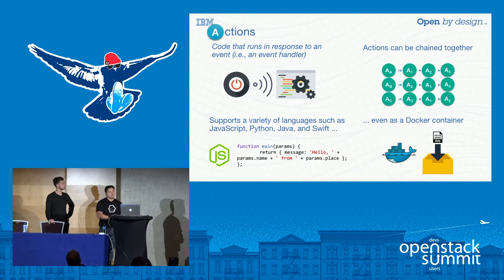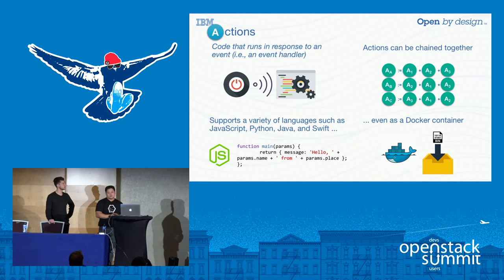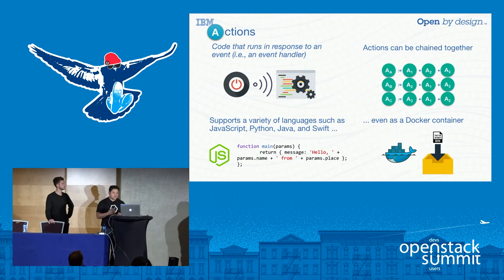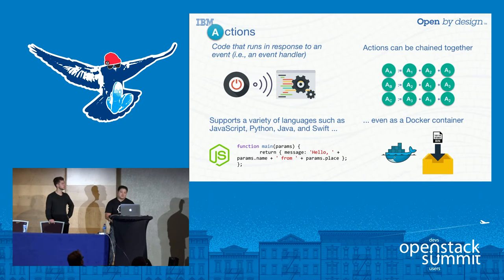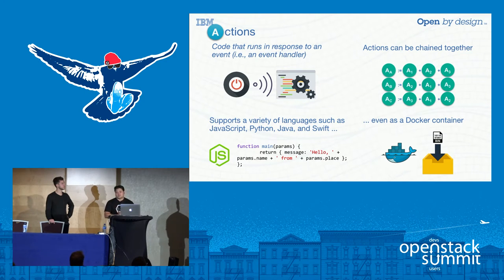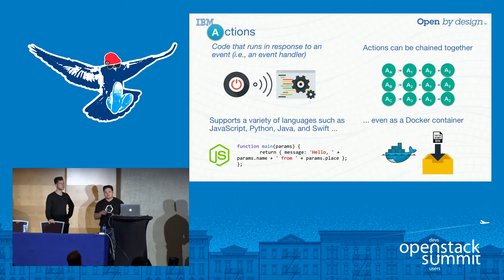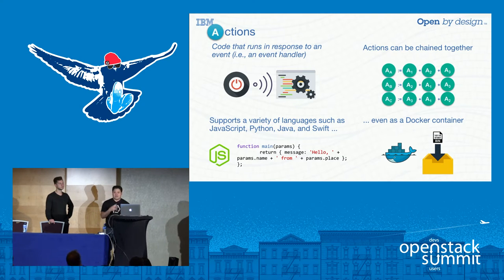OpenWhisk supports a polyglot development environment, so actions can be defined in languages such as JavaScript, Python, Java, and Swift, among other familiar programming languages. OpenWhisk also supports Docker containers, so you can take any of those languages or even binaries, drop them into a Docker container, register the action with OpenWhisk, and have them execute easily and consumably through an API.